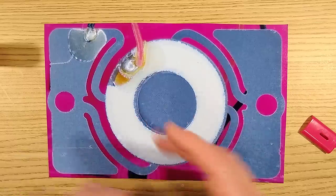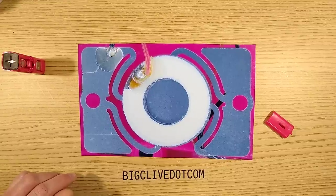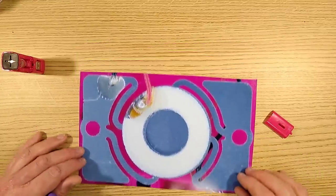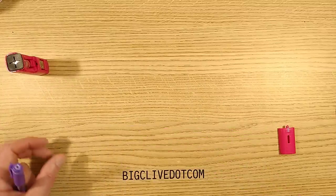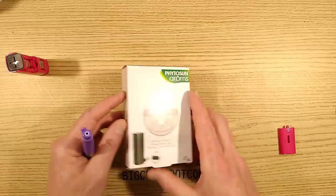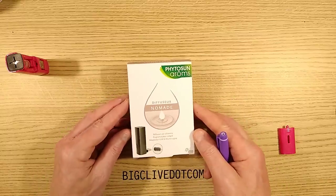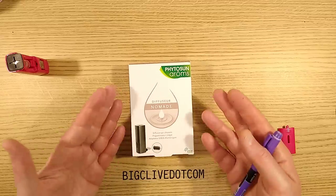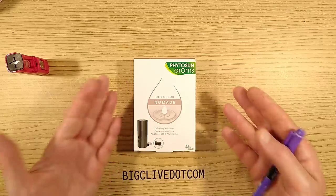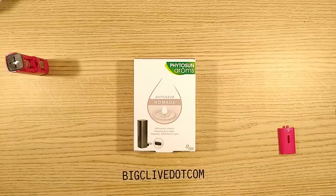The disc has micro perforations, and the movement of the ultrasonic disc against the top of the wick on the bottle forces little droplets of oil through. The surface atomizes it as a cloud of vapor. These things can be found on eBay at the moment, Phytosun Aroms being sold off in bulk.